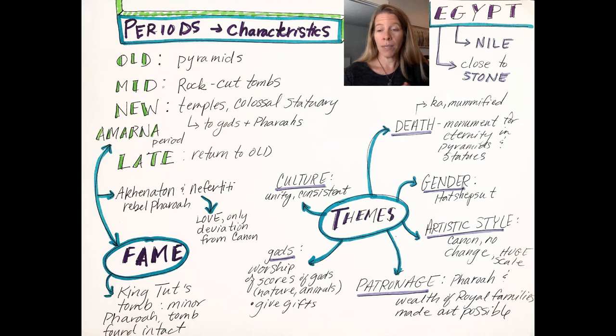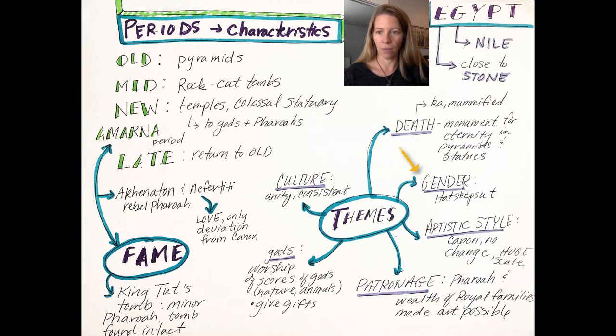We also see some themes revolving around gender. Queen Hatshepsut portrays herself as a pharaoh — as a male — which is unusual.